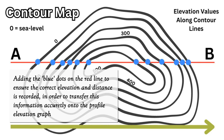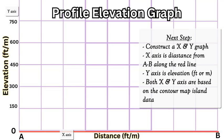The next step is to construct your X and Y axis graph. Here we have an elevation graph with the X axis being distance in feet or meters and the elevation on the Y axis in feet or meters. On the distance we have A to the left and B on the right, so we have our red line acting as our X axis and the elevation on the Y would be where you would plot your blue dots.